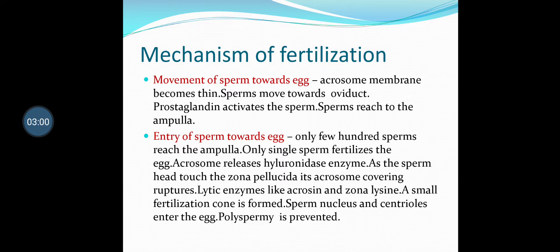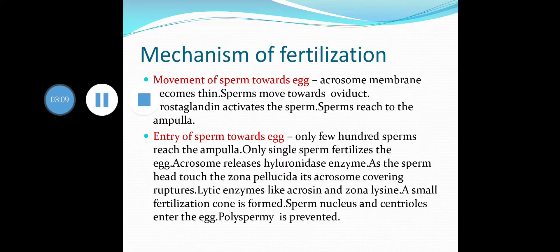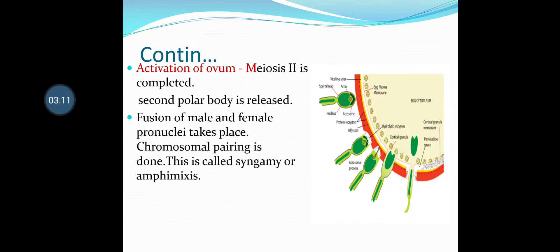Only a single sperm successfully enters the egg. Activation of ovum: meiosis 2 is completed, the second polar body is released, fusion of male and female pronuclei takes place, and chromosomal pairing is done. This is called syngamy or amphimixis, where chromosomes of male and female are combined.